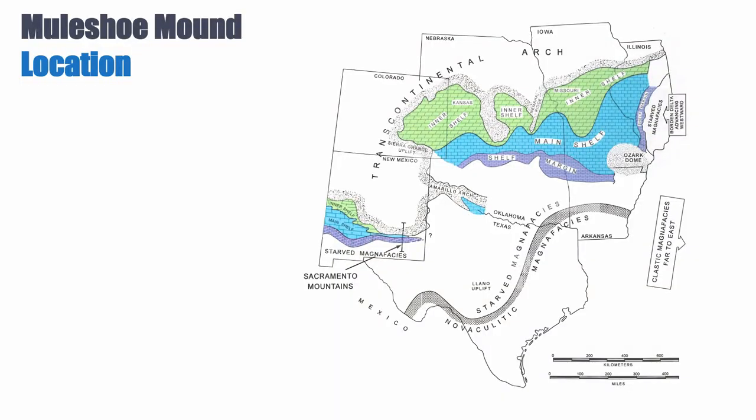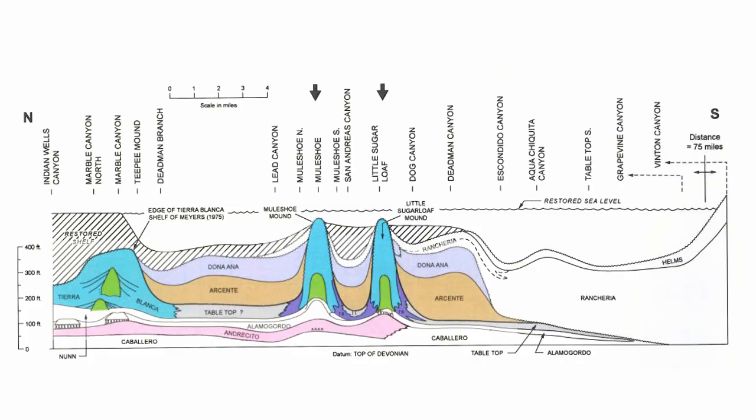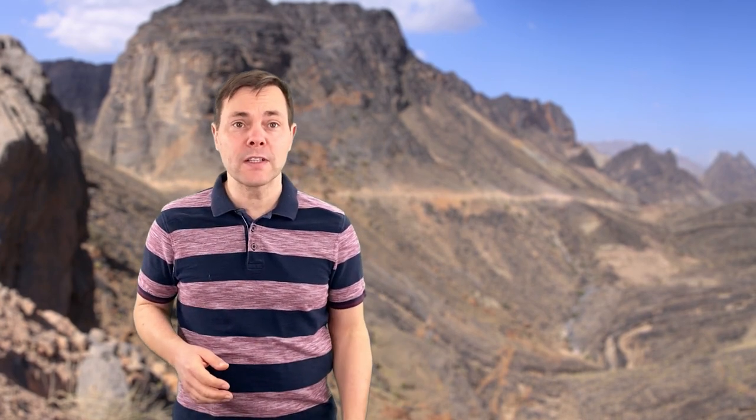Muleshoe Mound is located in New Mexico and it was deposited during the Carboniferous. In the Carboniferous, this was the edge of the continent — actually in a relatively deep, distal location at around several hundreds of meters of water depth. Muleshoe Mound is one of a series of mud mounds that you find along this coastline, so it's not a unique occurrence. It's not completely clear what controls their formation — it could be the presence of hydrothermal vents or other nutrients. But we know that once they start forming, we understand how they continue. So let's look closely at Muleshoe Mound.